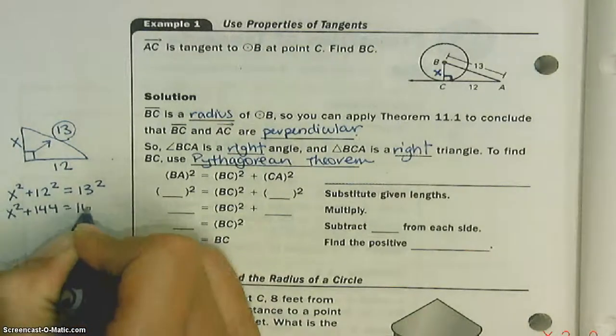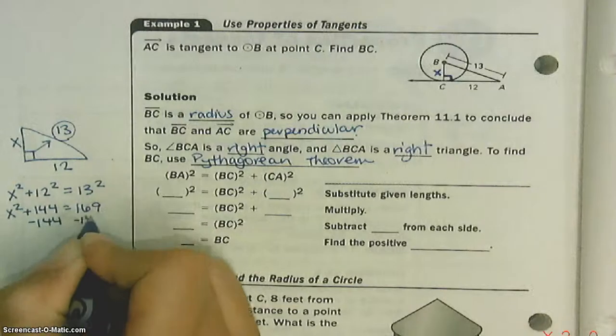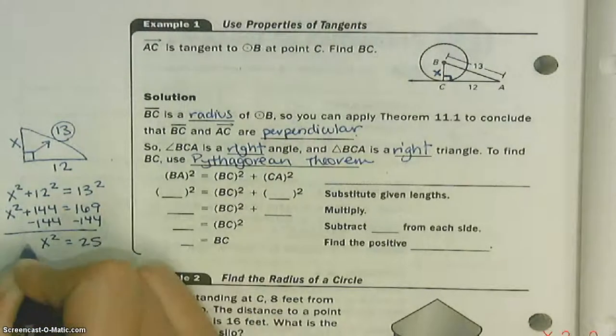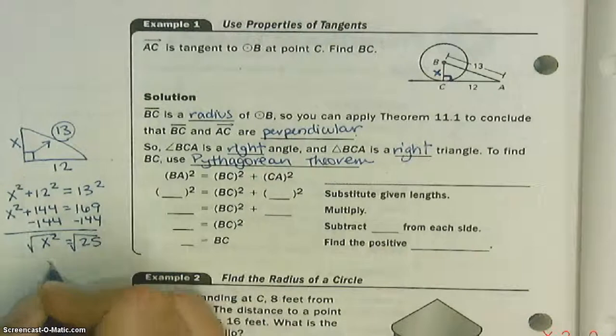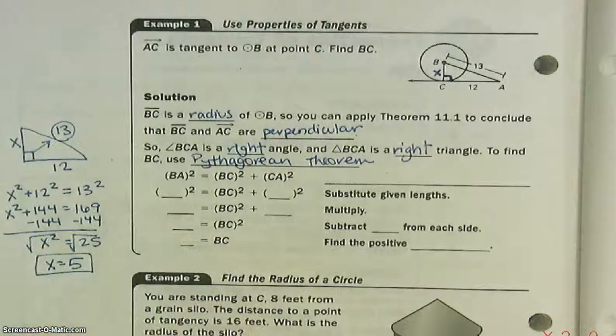Now, I'm just doing my algebra. Subtract 144 from both sides. X squared equals 25. We have to take the square root to get X all by itself. X is equal to 5.